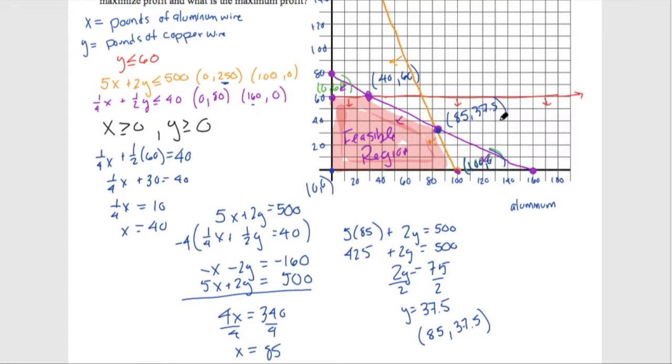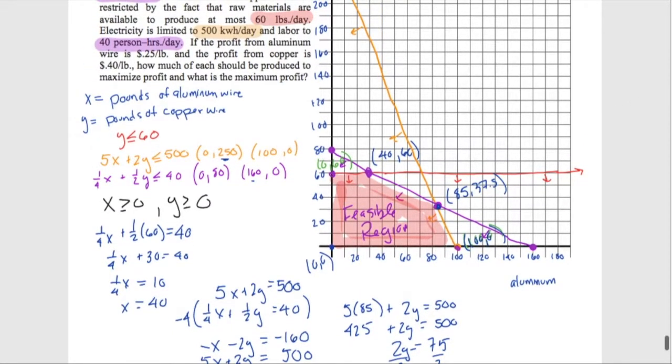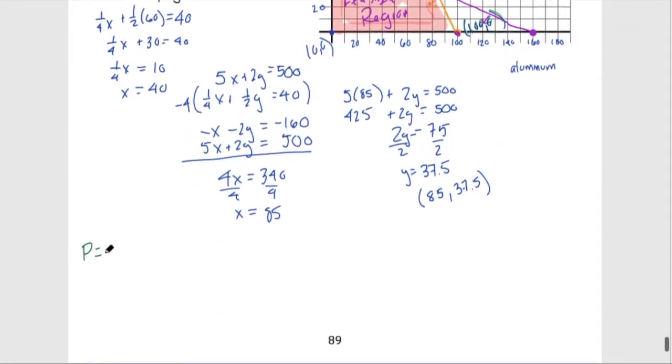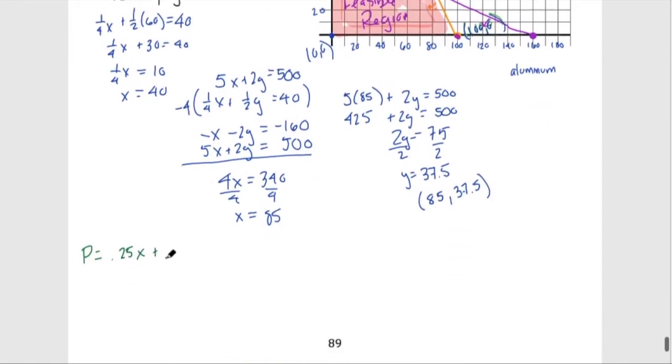All right. Well, now we need to consider how we're going to optimize profit in this one. So let's go back up to our problem and think about the profit. So the profit, we have 25 cents per pound from the aluminum and 40 cents per pound from the copper. So profit is equal to 0.25x plus 0.4y. Now for me, I might go ahead and turn this into fractions here just because I like multiplying by fractions more than I like multiplying by decimals. But now we're going to test our corner points.